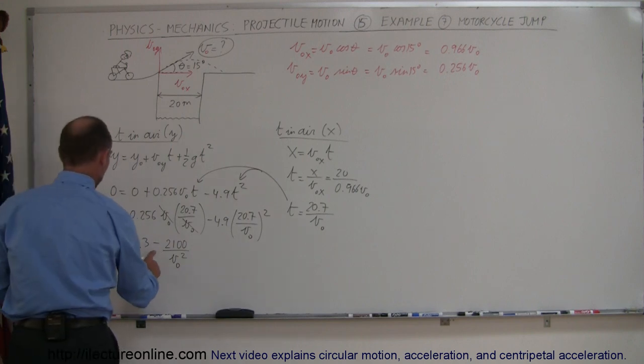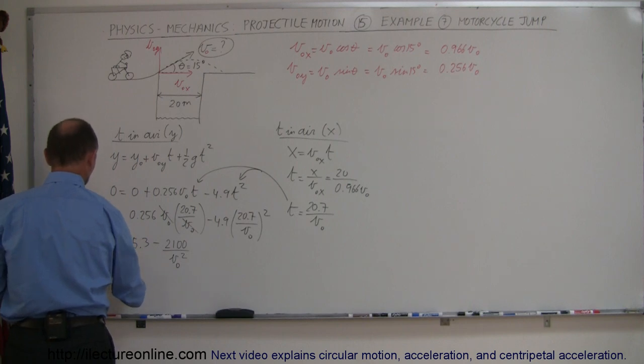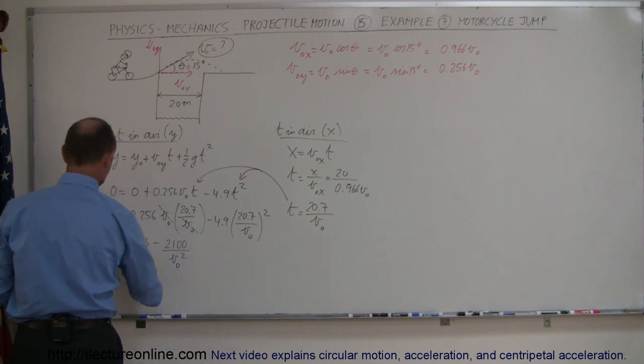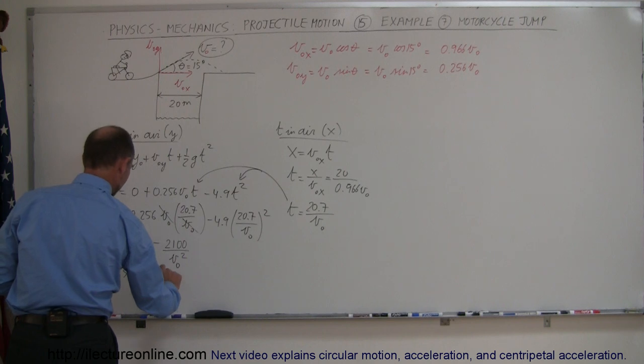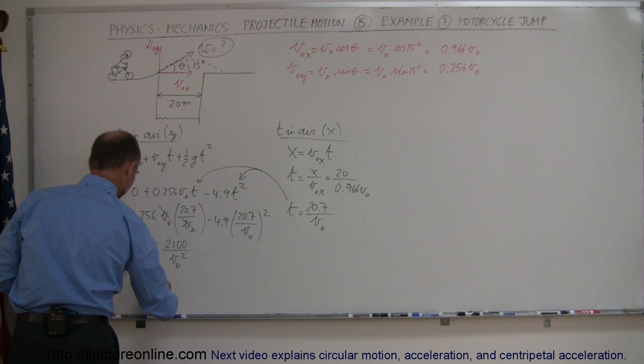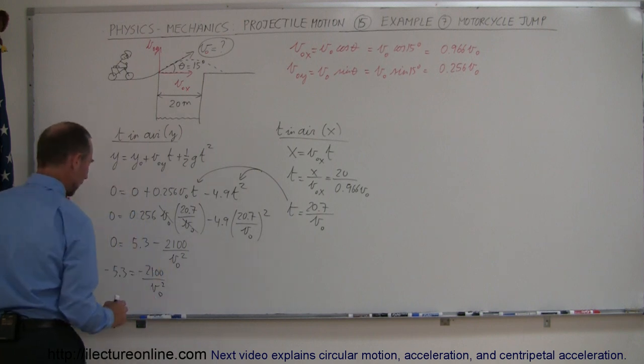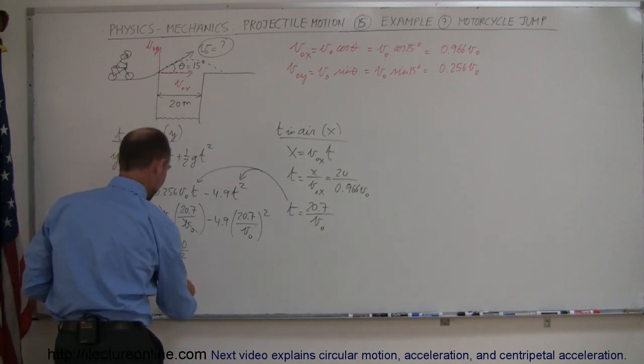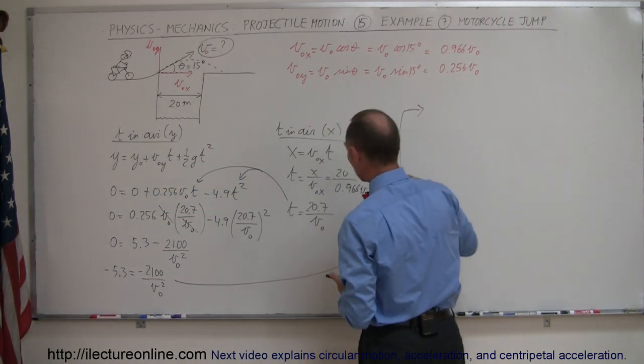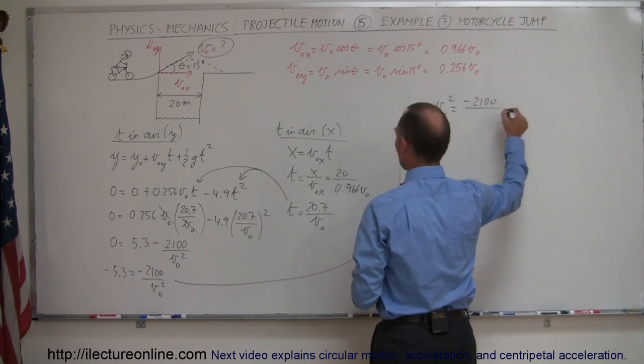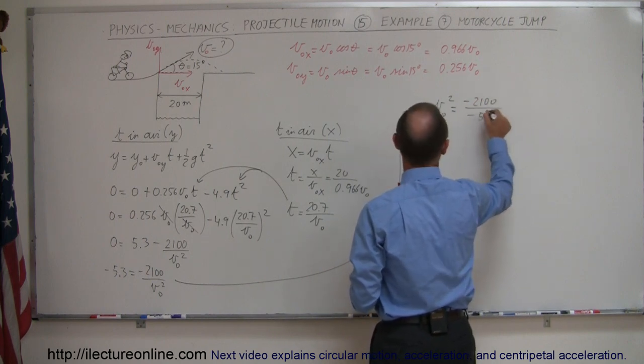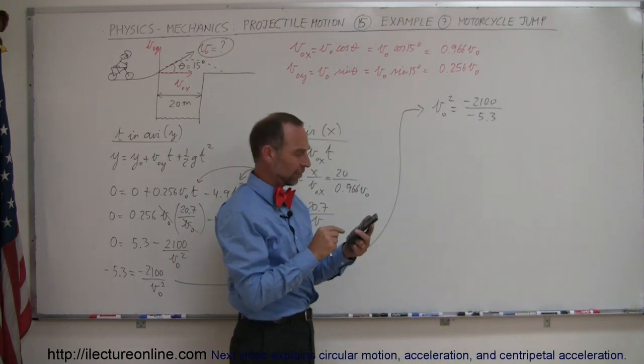So we're going to go ahead and move this over and turn the equation around so I have minus 5.3 equals minus 2100 divided by v initial squared, moving this over here and this down there, so I have v initial squared is equal to minus 2100 divided by a minus 5.3. Notice of course then the negatives cancel out so we have this divided by 5.3 equals, so we have v initial is equal to...